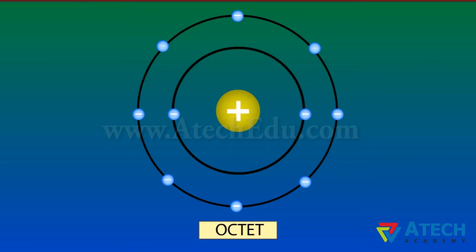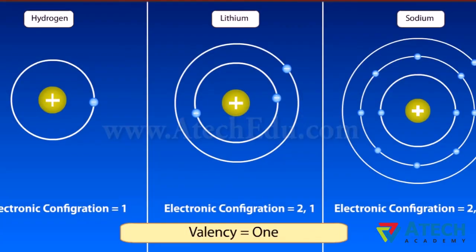Hydrogen, lithium, and sodium atoms contain one electron each in their outermost shell. Therefore each one of them can lose one electron, so they are said to have a valency of one.